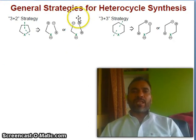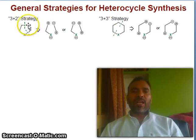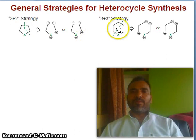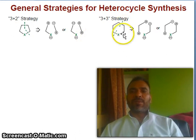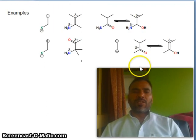General strategy for heterocyclic synthesis: three-plus-two strategy, then three-plus-three strategy. This means if you have the five-membered ring, it will break as three plus two — like that: three plus two, three plus two. Or if you have the six-membered ring, it will break as three plus three — three plus three, like that. So you see the example: this is three, this is also three.